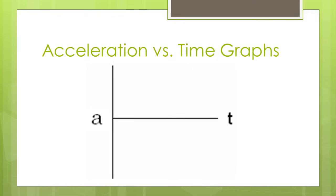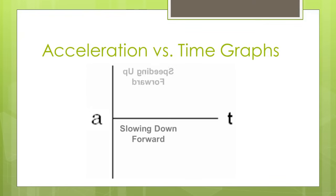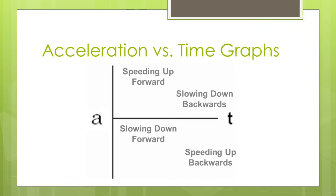Acceleration versus time graphs are a little harder to read because we're only looking at horizontal lines above or below the x-axis. We can find exact values, but it doesn't necessarily tell us directly whether objects are moving forwards, backwards, speeding up, or slowing down. However, because we know that for acceleration to be positive, both the direction of acceleration and velocity need to point in the same direction, we'll see above the axis representing speeding up forward or slowing down backwards, and below the axis representing slowing down forward or speeding up backwards.